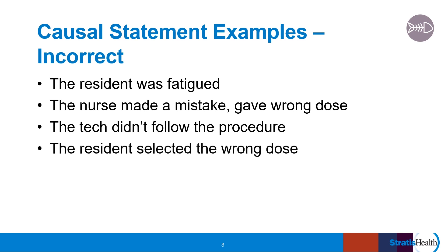Here are a few examples of incorrectly written causal statements. These examples describe a part of what happened but do not identify a cause that can be addressed. These examples identify a human condition such as fatigue, or identify that a mistake was made, but they do not describe factors or causes that led to the error. They focus more on individual behavior, such as not following a procedure, or seem to blame individuals, such as 'the resident selected the wrong dose.' They do not lead us to actions we can take to eliminate or control system hazards.